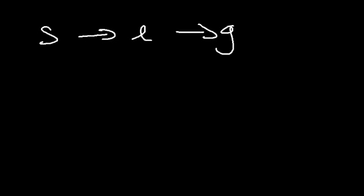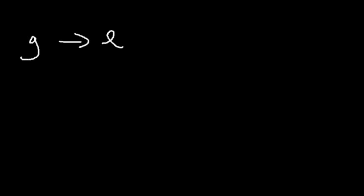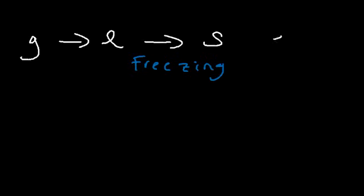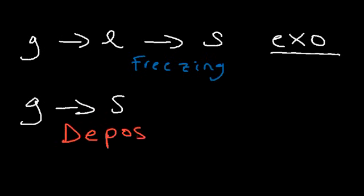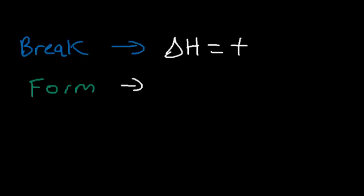Anytime you go from a solid to a liquid to a gas it's endothermic — you have to add heat. Going from a solid directly to a gas is called sublimation, and that is an endothermic process. The reverse — going from a gas to a liquid (condensation) or from a liquid to a solid (freezing) — requires removing heat from the system, so these are exothermic processes. Going from a gas directly to a solid is called deposition, which is also exothermic. Whenever you break a bond that requires energy — it's endothermic. Anytime a bond forms, energy is released — it's exothermic.